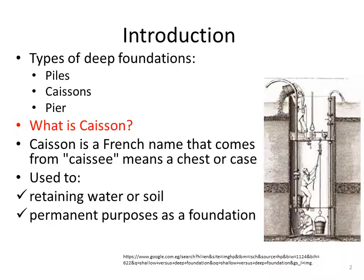First, what is a caisson? A caisson is one of the types of deep foundations. The word origin is 'caisse', which is French, meaning a chest or a case. It is mainly used to retain water or soil and as a permanent foundation system — for example, a multi-story basement or a bridge pier.